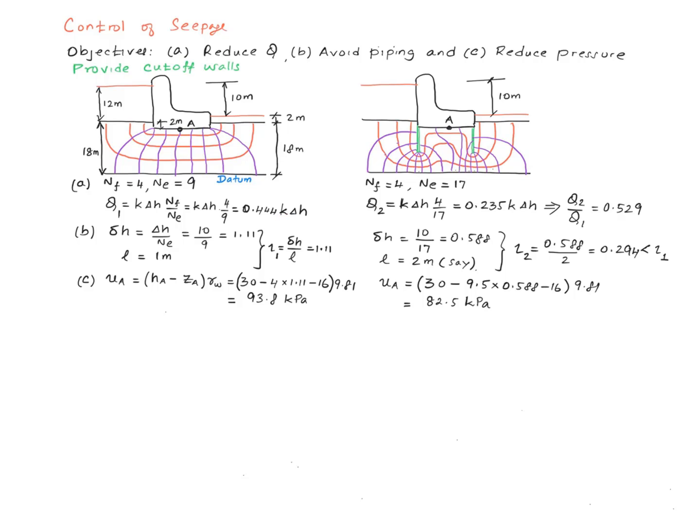Keeping k and delta-h the same, q works out to be 0.44 k times delta-h for this problem, whereas it works out to be 0.235 k times delta-h for this problem. So the ratio between the two is 0.529, and therefore the volume rate is cut down by almost by a factor of 2.